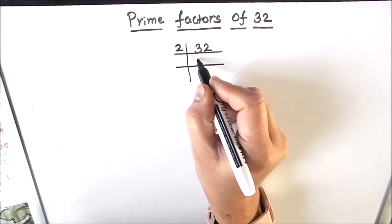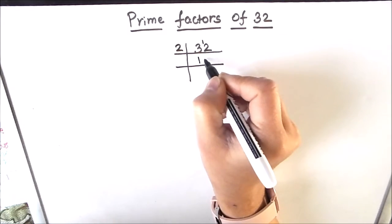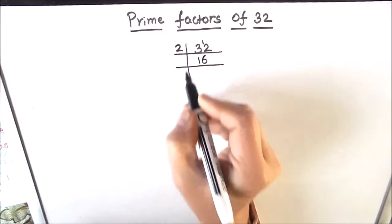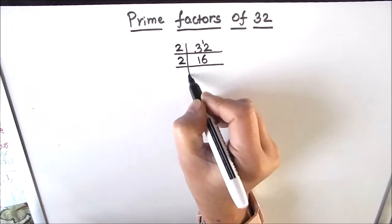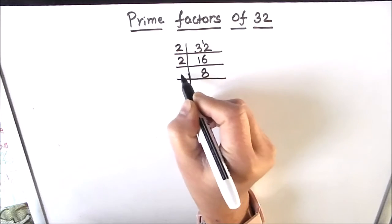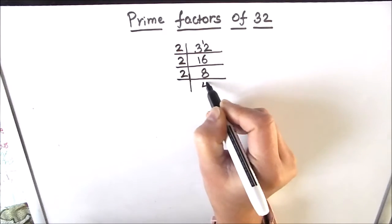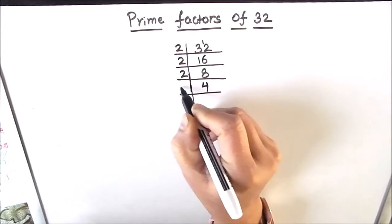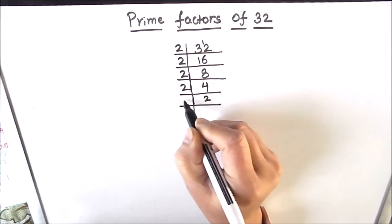2 times 1 is 2. 2 times 6 is 12. Again, 16 is fully divisible by 2. 2 times 8 is 16. 2 times 4 is 8. 2 times 2 is 4, and 2 times 1 is 2.